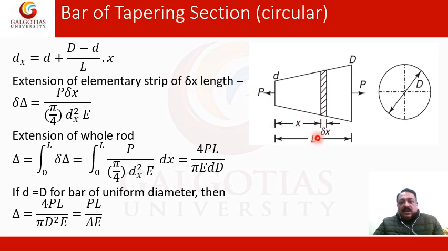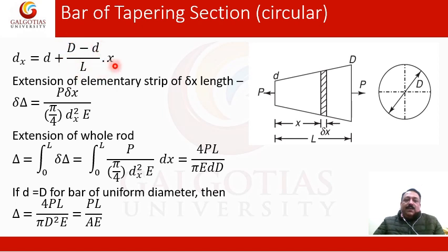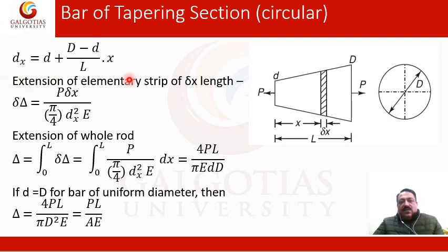The diameter is changing from small d to capital D over a length L. So the rate of change of diameter would be (capital D minus small d) divided by L. Per unit length, the change is (D − d)/L, and at distance x the increment is this rate multiplied by x. Adding this increment to the minimum diameter small d gives the diameter dx at that section. This is the interpolation formula for the diameter at distance x from the small end.